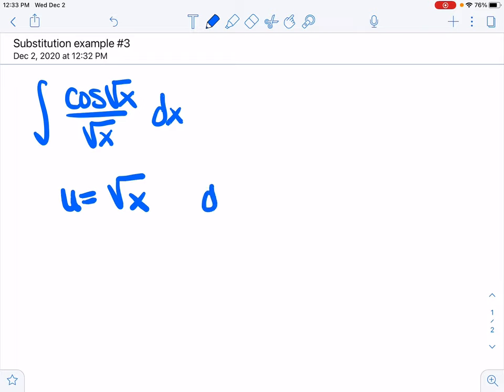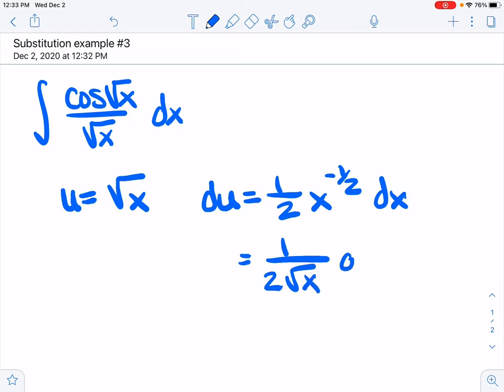So here we go. There's u. du then would be 1 half x to the minus 1 half dx, which is 1 over 2 times the square root of x dx.